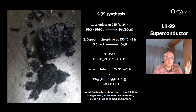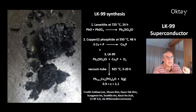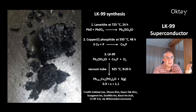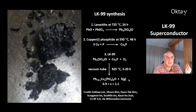This is how the synthesis works. First, you make lanarkite at 725 degrees Celsius for 24 hours by heating a mixture of lead oxide and lead sulfate. Second, you synthesize copper phosphide from the elements at 550 degrees Celsius for 48 hours. Third, you synthesize LK99 from lanarkite plus copper phosphide plus oxygen in a complex redox reaction, in a vacuum tube at 925 degrees Celsius for 5 to 20 hours. The by-product is sulfur.